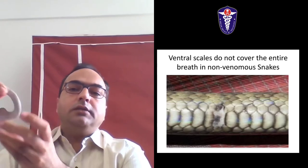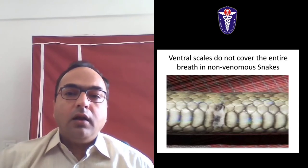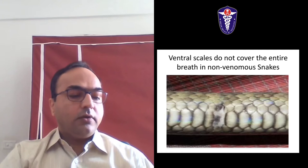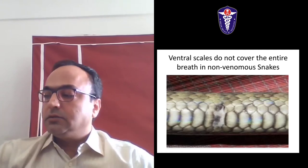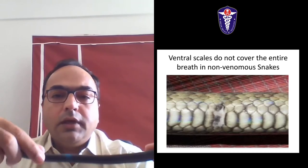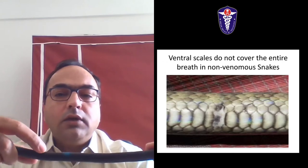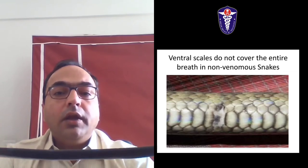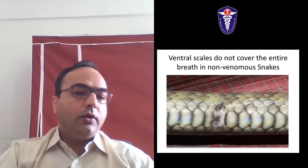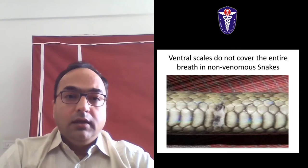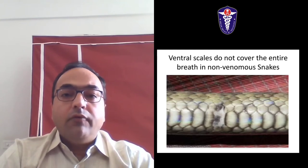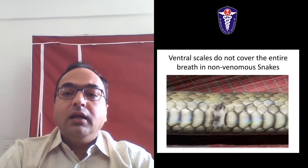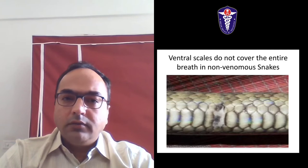There are few snakes like the krait which we can also examine. There is a central row of enlarged scales on the back - they are hexagonal bands or half rings on the back - subcaudal and undivided. Then it becomes a krait, which is also venomous. So this is a simple way of classification based on the scales, the head, back, and belly scales.